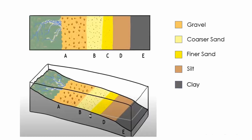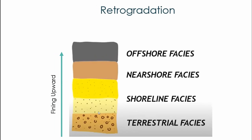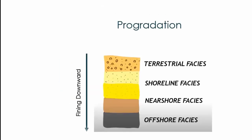The sea is indicating the shoreline. If sea level rises, the shoreline will shift landward and we will find a fining upward facies sequence, where we find terrestrial facies at the bottom and offshore marine facies at the top. These changes are known as retrogradation.